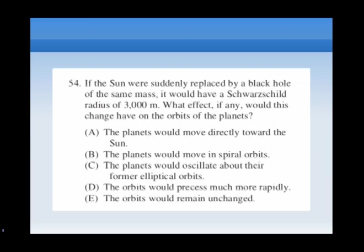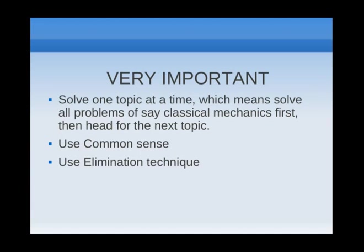Use your common sense. There will be some problems for sure which can just be solved by using common sense. For example, this problem here. Now for the uninitiated, Schwarzschild radius might be a scary term. But if you look closely, this term is not really playing any role. And just by using common sense, we can tell that it should be option E which is the right answer. So there will be problems which can just be solved using common sense.